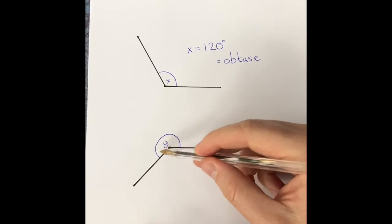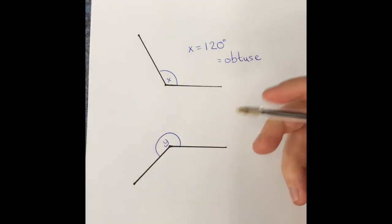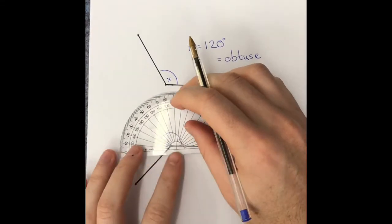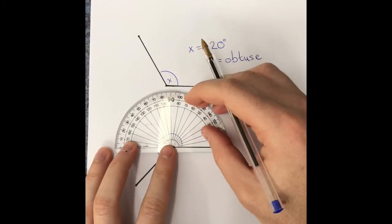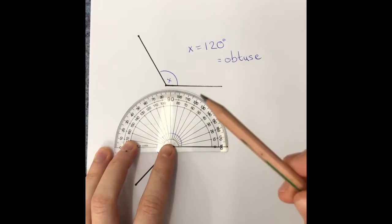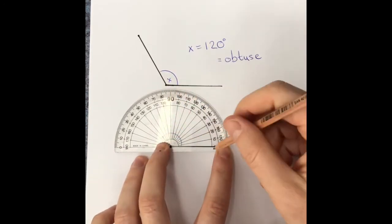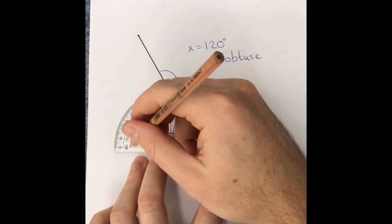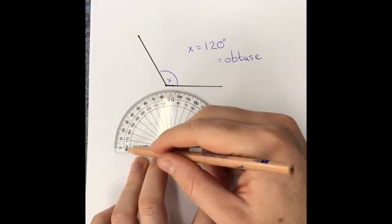If you're asked to measure the angle of Y, you can do it this way. That's why it's really good to use a pencil in case you need to rub it out. You know a straight line has the degrees 180.